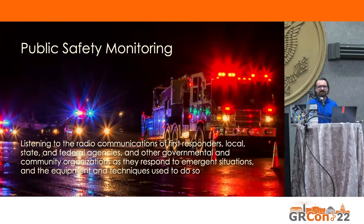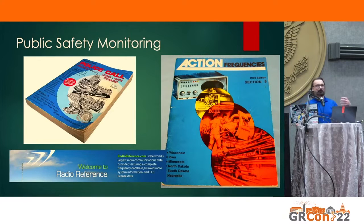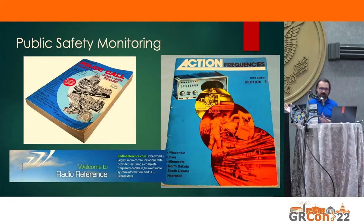How exactly do you go about monitoring these public safety systems? First, you need to know what frequencies to monitor for the agencies of interest. Back in the day, you could buy books based on location with lists of frequencies for police, fire, EMS, state police, road crews, etc. But these days you're more likely to go to an online database like Radio Reference, which has all of that information plus a lot more, including mapping of talk group IDs to all users on trunked radio systems.